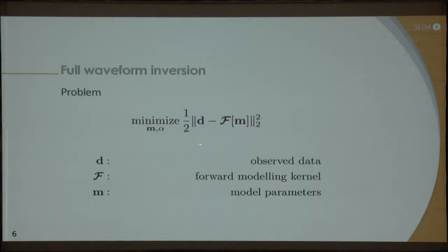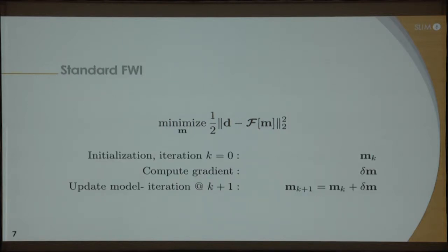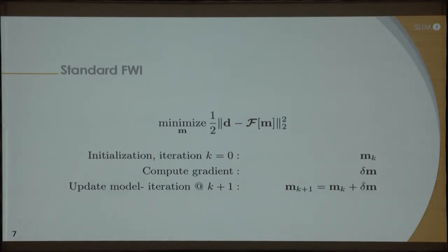If you know the source wavelet, then the alpha is no longer going to be there. You just want to minimize — find the solution M that actually explains this data misfit. In summary, we've had a lot of talk about the conventional way of doing waveform inversion. You start with a starting model, compute a gradient, and then update that model. This is an iterative process, and that is what full waveform inversion does. Given some stopping criterion, you find a final model that is supposed to fit the observed data.